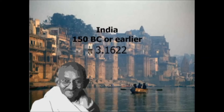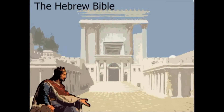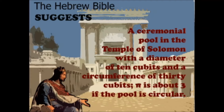In 150 BC, or perhaps earlier, Indian sources treat pi as 3.1622. Two verses in the Hebrew Bible describe a ceremonial pool in the Temple of Solomon, with a diameter of 10 cubits and a circumference of 30 cubits. The verses imply pi is about 3 if the pool is circular.